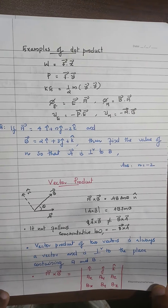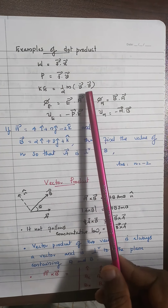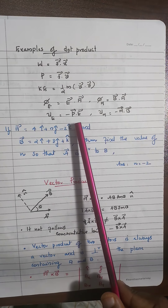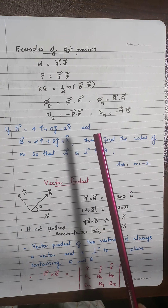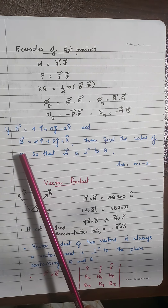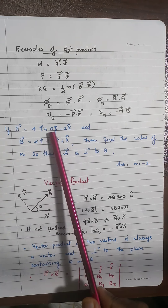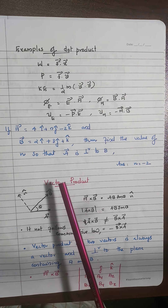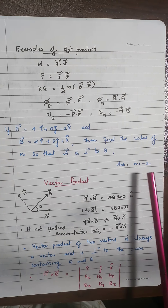Examples of dot product in plus-one and plus-two physics: work done, kinetic energy, electric flux, magnetic flux, potential energy of an electric dipole in an electric field, and potential energy of a magnetic dipole in a magnetic field. Examination question: if vectors A and B are given, find the value of n so that A is perpendicular to B. Since A·B = 0 when the angle is 90°, equate the dot product to zero — you get n = −2.